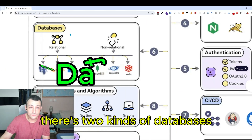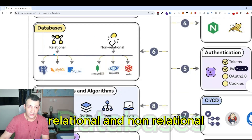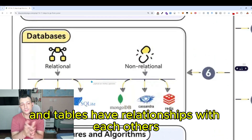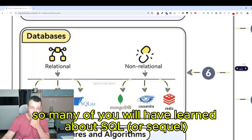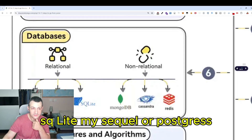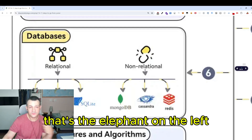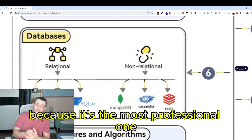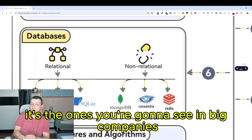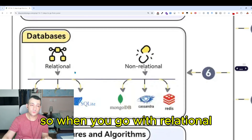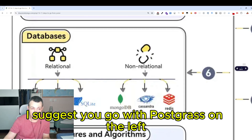Next: databases. There are two kinds — relational and non-relational. Relational databases have tables with relationships between them. You may have learned about SQL; SQLite, MySQL, and Postgres are just different flavors of SQL. If you had to choose one today, go with Postgres — it's the most professional one, used in big companies, but easy enough for small projects too.